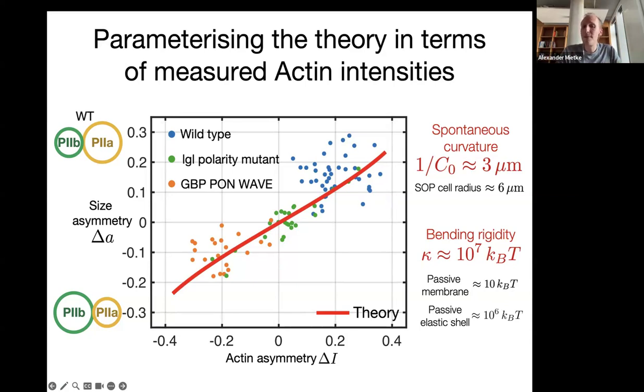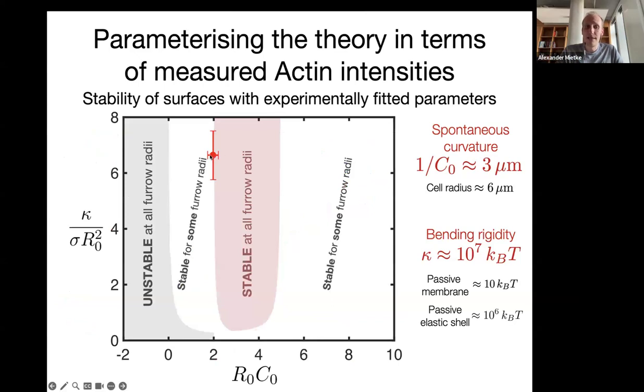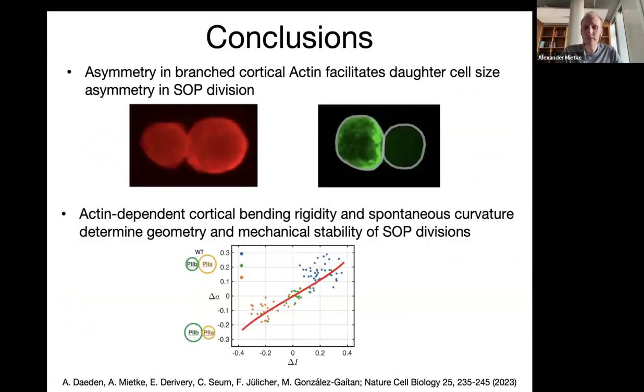What we find is that the bending rigidity is actually much larger than you expect it to be if you would think of a naive passive elastic shell model, indicating again that actually active processes are modifying this kind of material property. Last comment on this is that now this curve is heavily constrained by the fact that we also require any of these shapes to be mechanically stable. That really reduces the kind of parameter regime where you are allowed to be quite drastically. And this is where actually our best fit ends up with. So we are almost stable for all furrow radii.